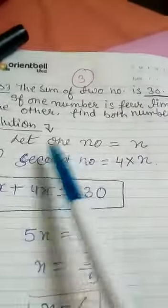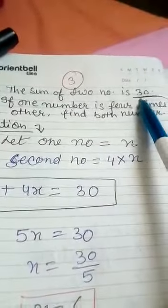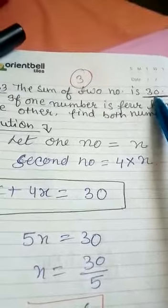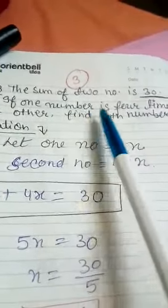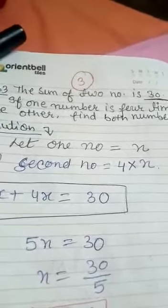Okay, question number three: The sum of two numbers is 30, means when we are adding two numbers their sum is 30. If one number is four times the other, find the numbers.